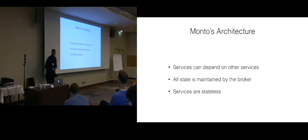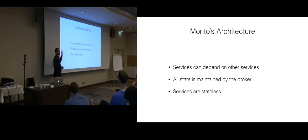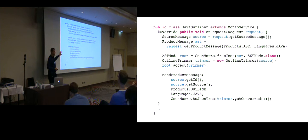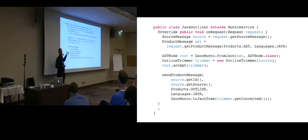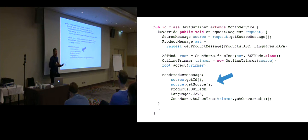To summarize: in this architecture, services can depend on the results of other services; all state is maintained by the broker, which is the source of truth; and services can be implemented as stateless, taking all input at once and producing output — making implementation very straightforward. Here is a Java code example of the Java outline service: you implement one method that is called whenever the service receives a result. You unpack the messages you need, produce the outline result, package it in the intermediate representation, and send it back to the broker.